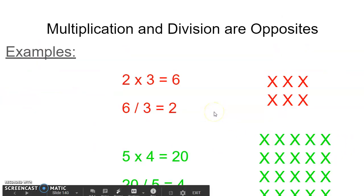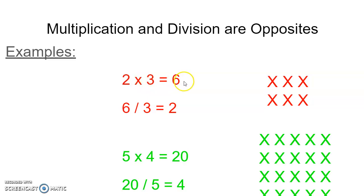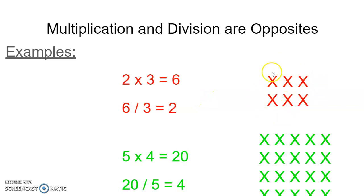Here are a couple of examples to illustrate. In red here, you see we've got two times three equals six. And down below it, six divided by three equals two. Notice that the parts are the same — we've got two groups of three equals six, and here we've got six total items divided by three gives us two. An illustration for that is this array here — we've got two rows of three X's, and when you put it all together, you get six.